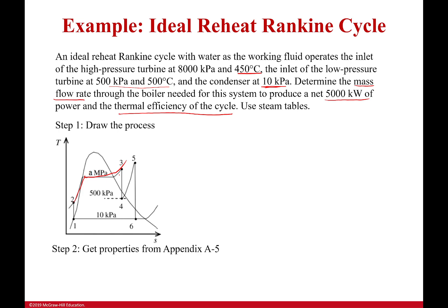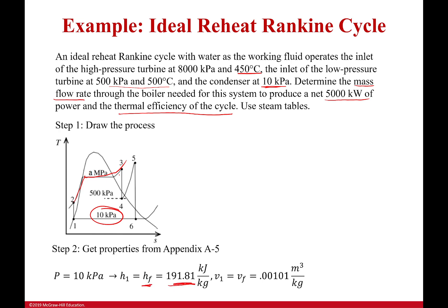Let's get the properties from Appendix A5. We start at point 1 — pressure is 10 kilopascals. Go to your saturated mixture pressure table and find the enthalpy of the saturated liquid, which comes out to 191.81 kJ/kg. We're also going to need the specific volume so we can calculate how much work the pump does and get the enthalpy at point 2.